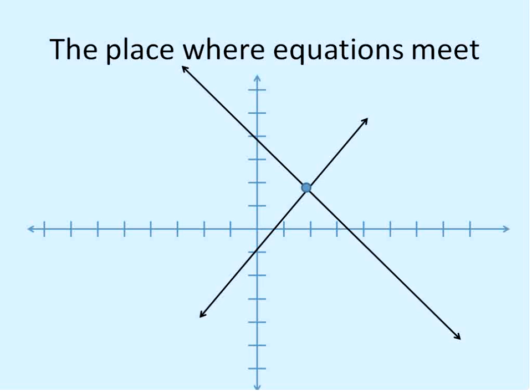The place where they meet in this case is right there. We can locate that as the point 2, 2. That would be the solution for this system.